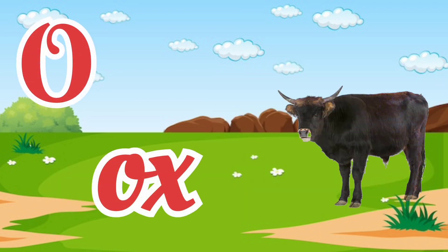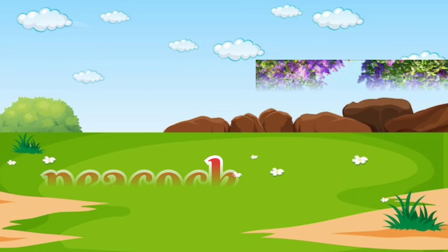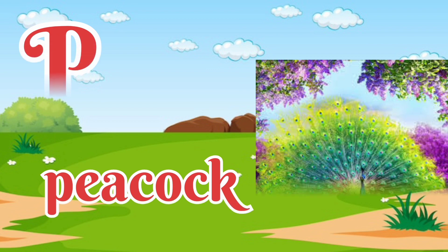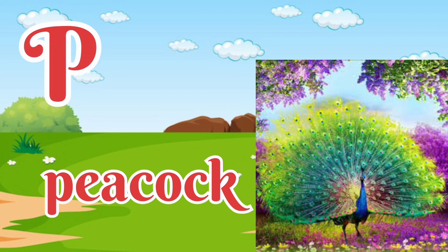O for ox. Ox means bale. P for peacock. Peacock means moor.